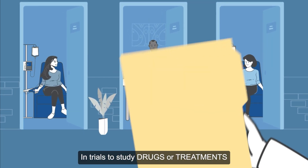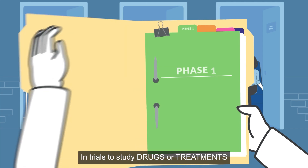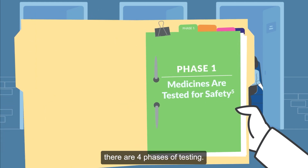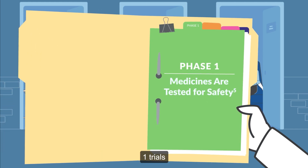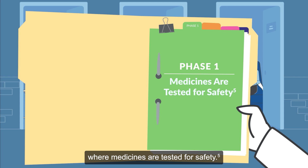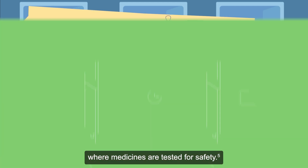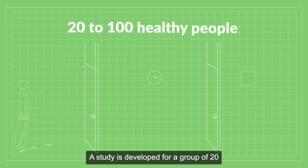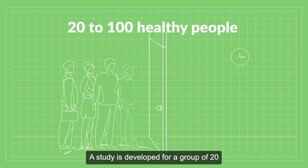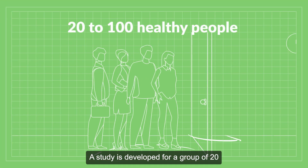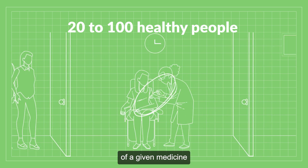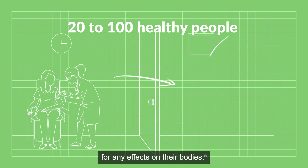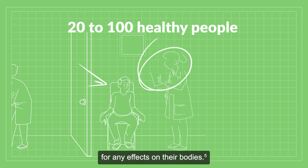In trials to study drugs or treatments, there are four phases of testing. Phase one trials are where medicines are tested for safety. A study is developed for a group of 20 to 100 healthy people who take a small amount of a given medicine and are monitored for any effects on their bodies.